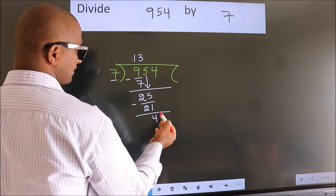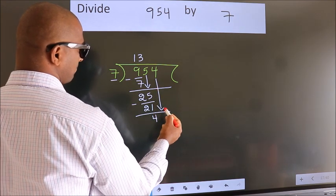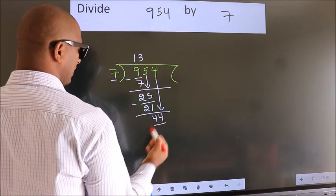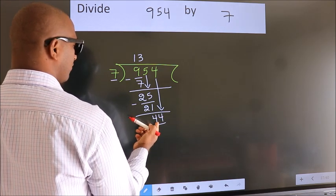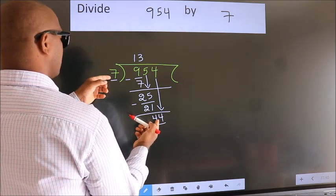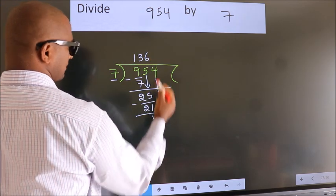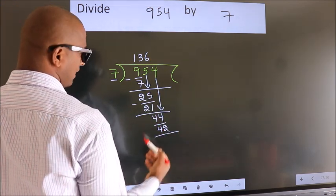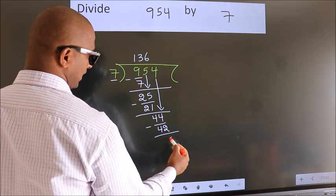After this, bring down the beside number. So, 4 down. So, 44. A number close to 44 in 7 table is 7, 6, 42. Now, we subtract. We get 2.